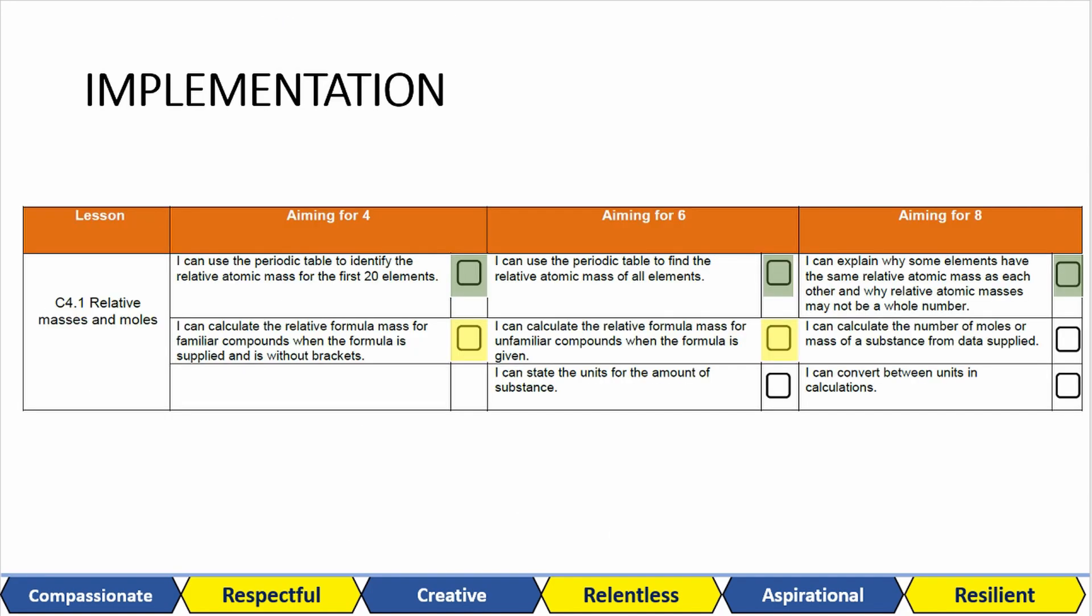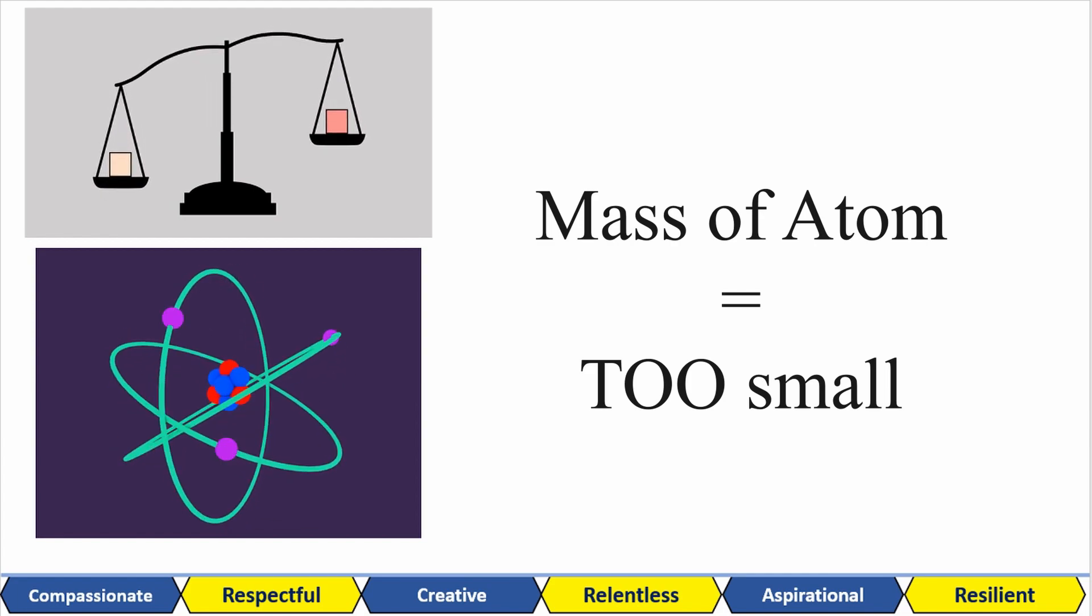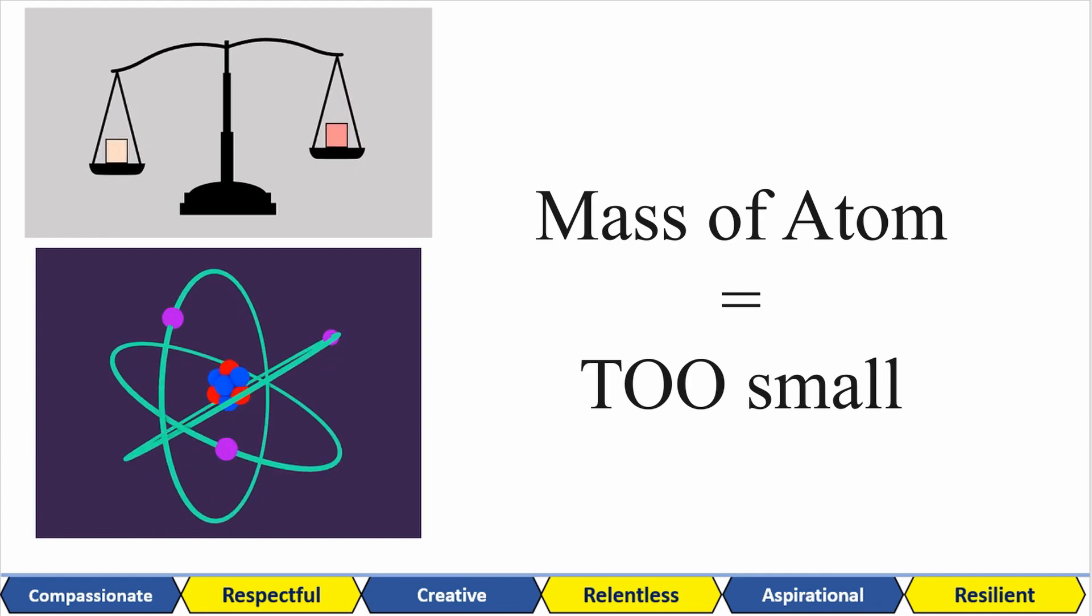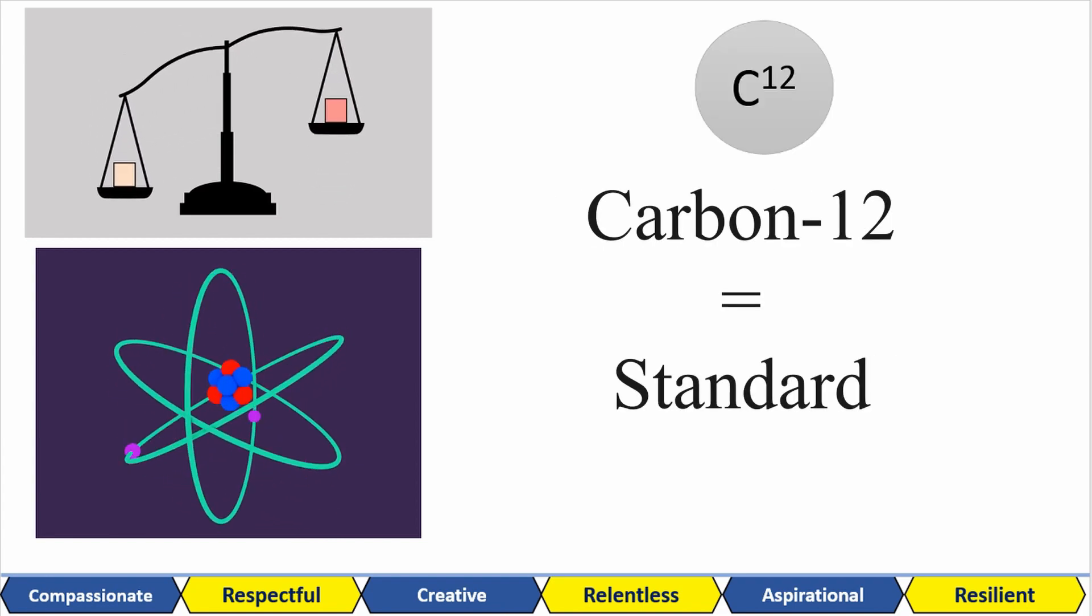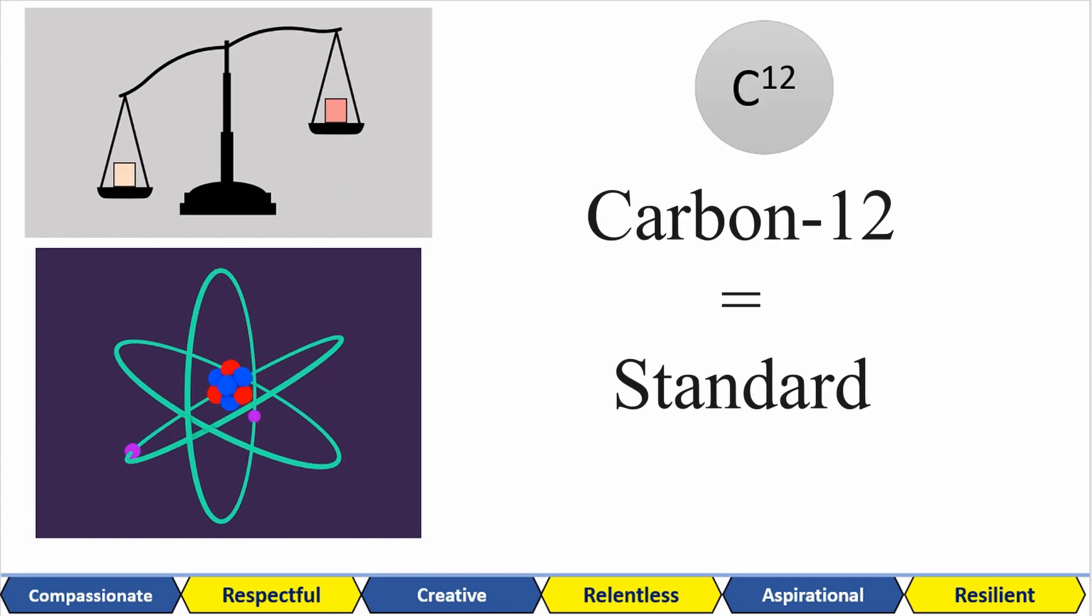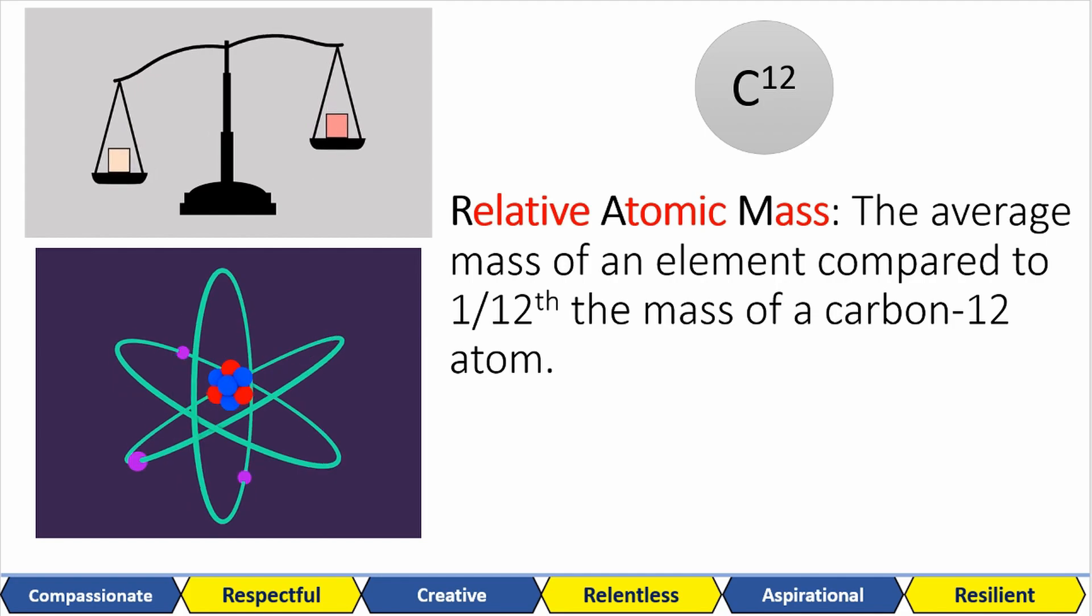Now for the meat and potatoes of the lesson. Atoms are very small. The real masses of atoms are way too small to be useful to do any calculations with. So we use a standard to help us compare elemental masses with each other. For various reasons that you don't need to worry about, the isotope carbon-12 is our standard. That means that our relative atomic mass of an element is the average mass of an element compared to one twelfth the mass of a carbon-12 atom.